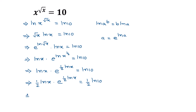Now taking the Lambert W function of both sides, we can write W of 1/2 times ln of x, times e to the power of 1/2 times ln of x, is equal to the right side which will be...